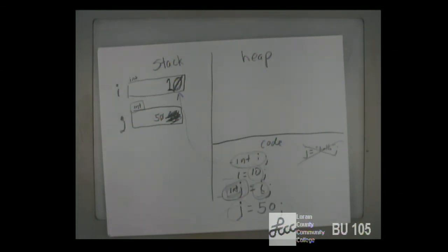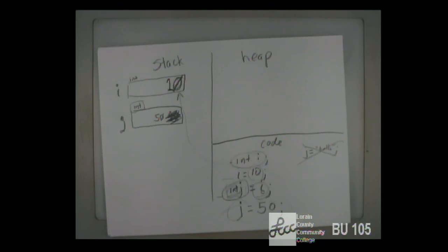That's how primitives work. There's a handful of primitives: ints, doubles, booleans, a char variable for a single character — probably seven or eight of them total. If you tried to do `j = "hello"`, you'd get a compiler error because you can't put a string in a place that's reserved for integers.